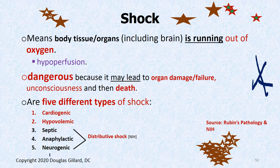There are different kinds of shock — some say five, some say six. But they all do the same thing: your blood runs out of oxygen, your tissue starts starving, and you can die if you don't correct this. You're hypo-perfused, and it's dangerous. You kill your brain, your heart dies, your liver dies, your kidneys die.